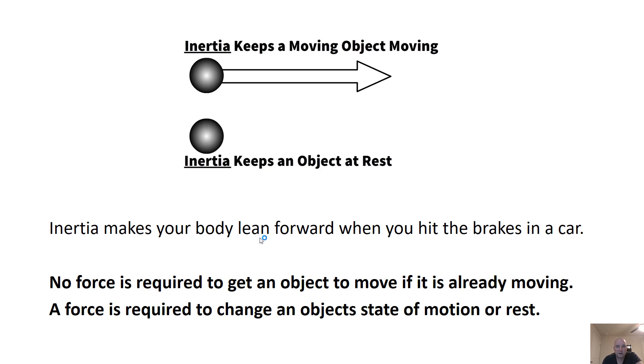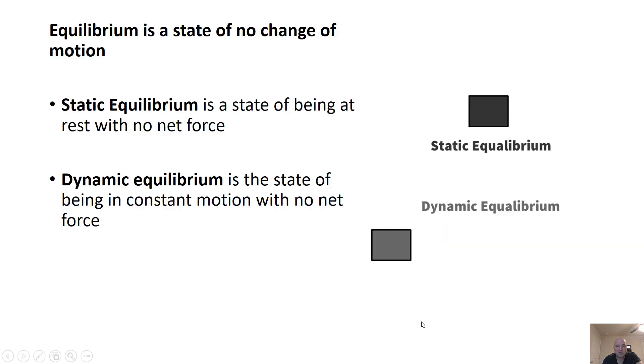No force is required to keep an object moving. It's already moving. A force is required to change its state of motion. There's two types of equilibrium. Static equilibrium means it's not moving and there's no net force, so it's going to stay not moving.